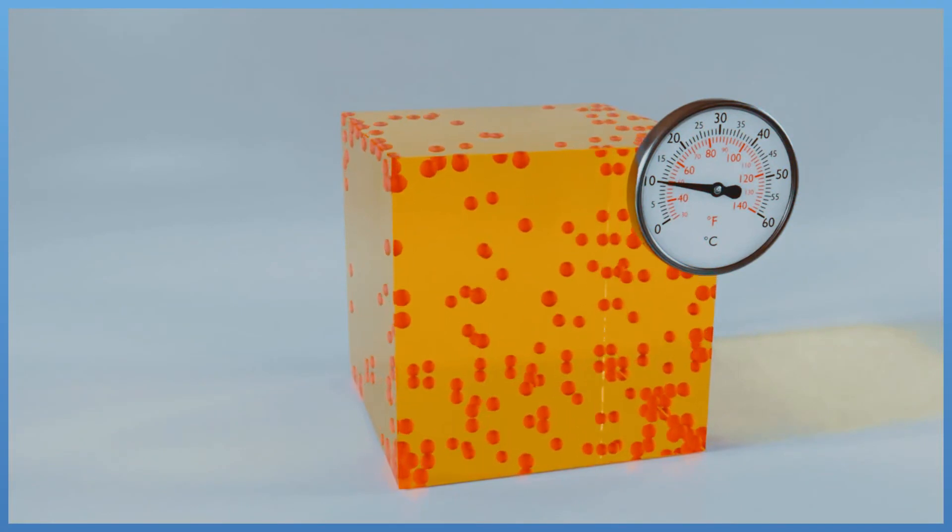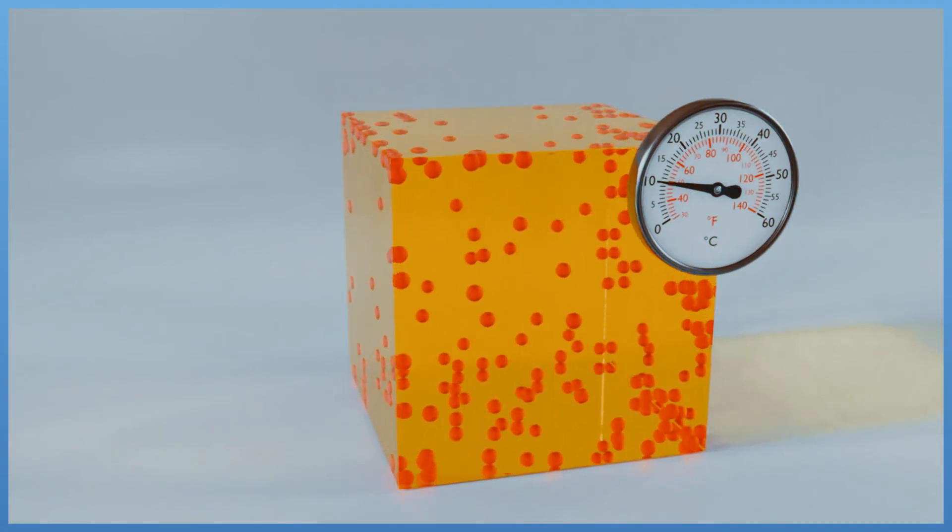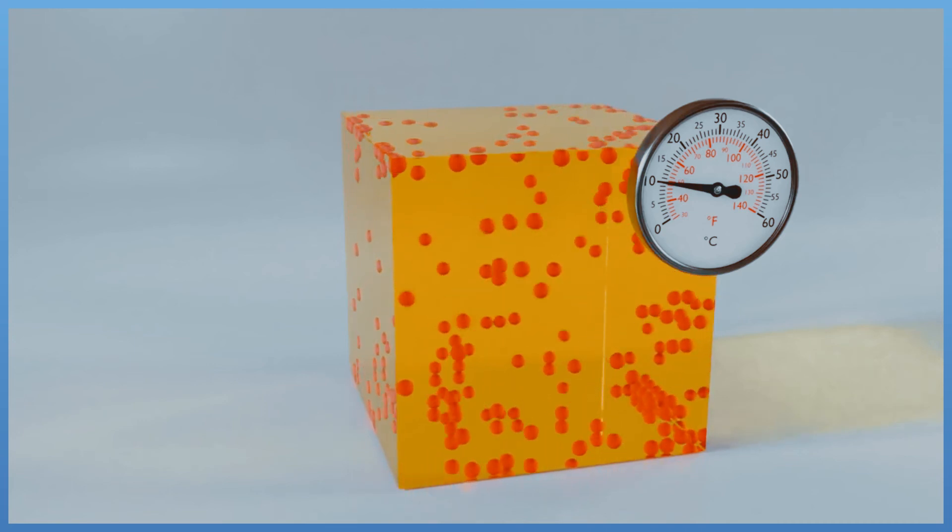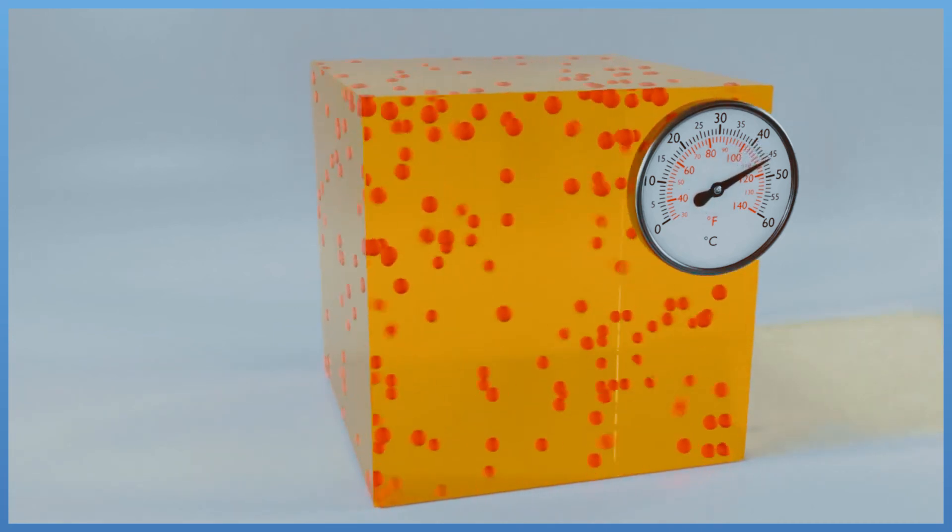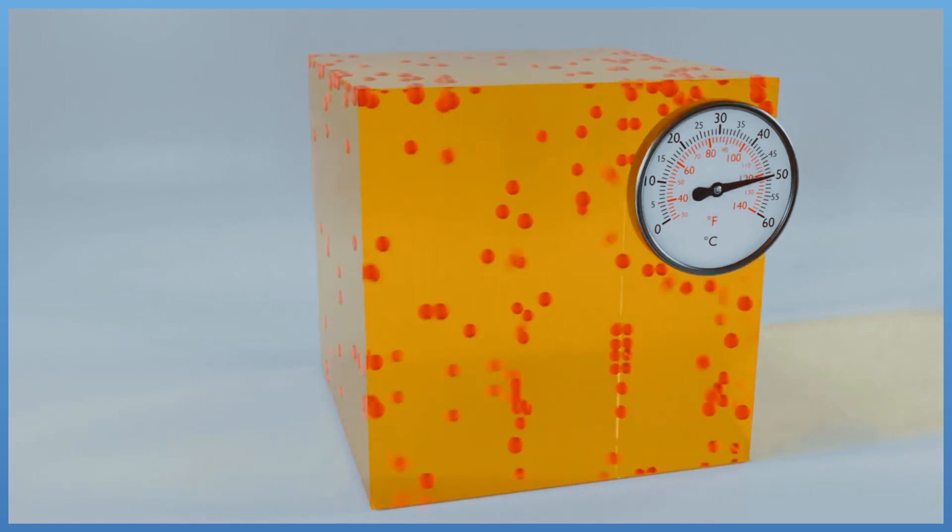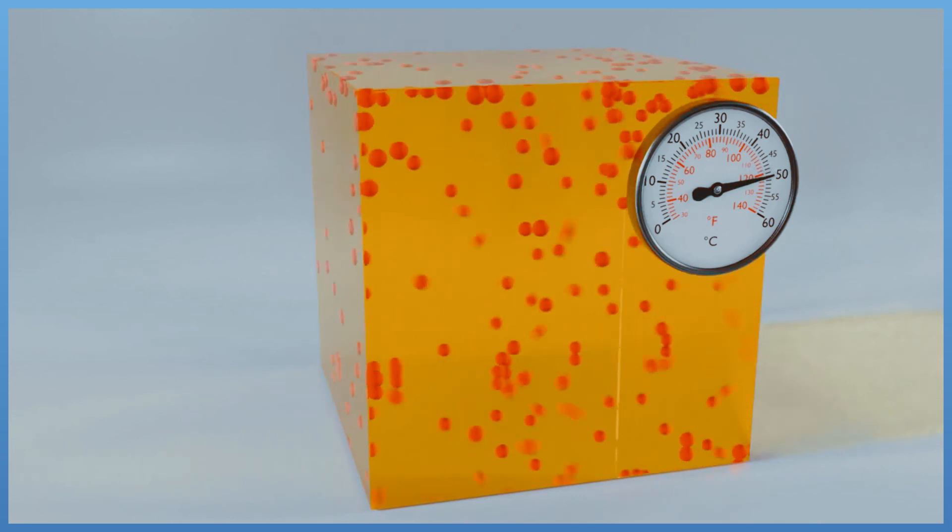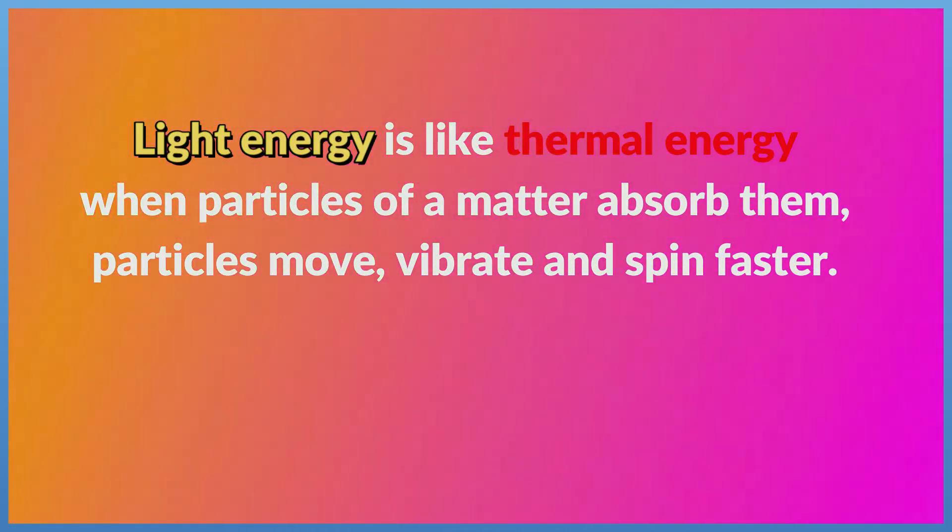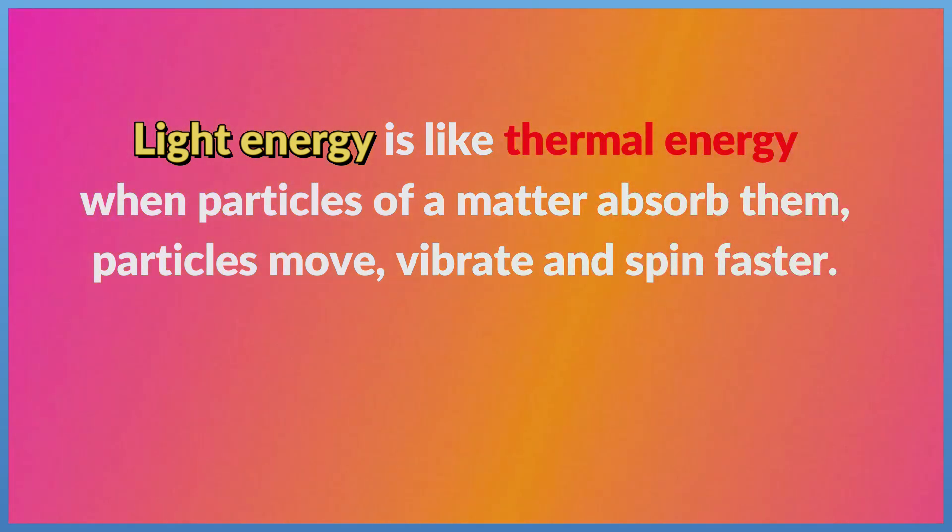When particles are cooled down, particles move slower and come close together. When particles are warmed, they move faster and spread out. Light energy is like thermal energy when particles of a matter absorb them. Particles move, vibrate and spin faster.